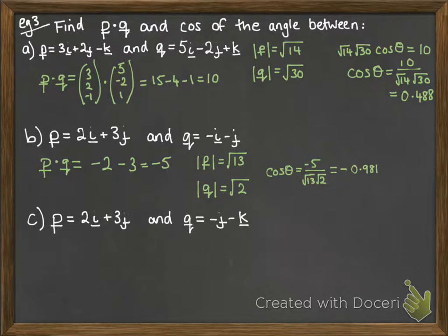And then the next one, be careful with this one, because it looks like it could be 2D, but it's actually 3D. We do have i, j, and k components, but there's a 0 on the k component for P and on the i component for Q. So just make sure you include that 0 there.